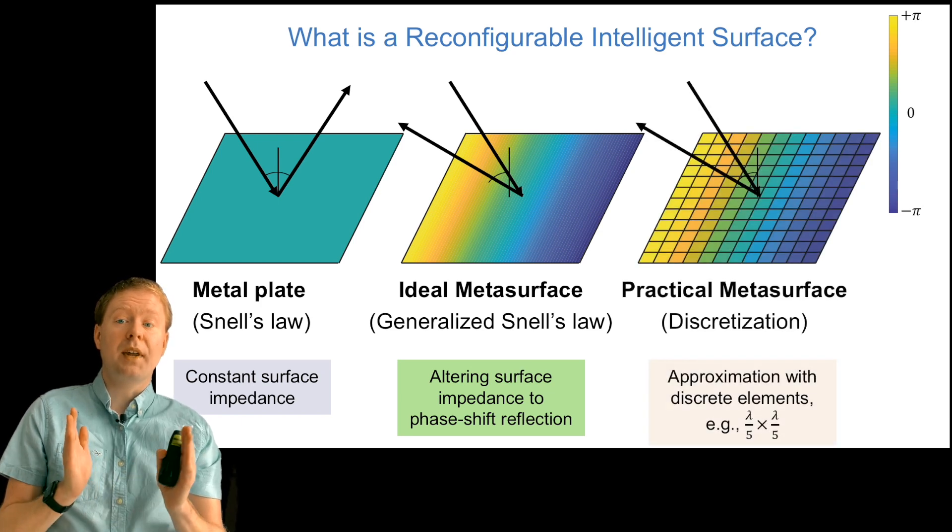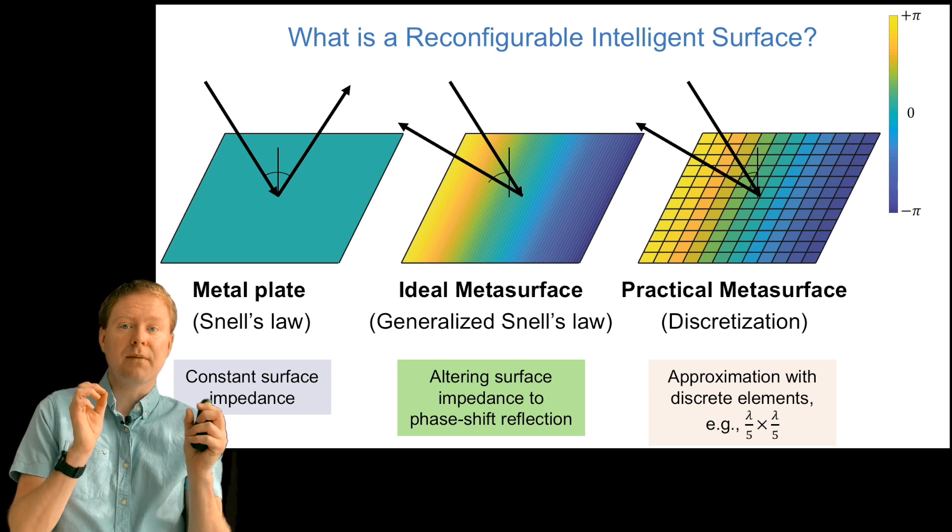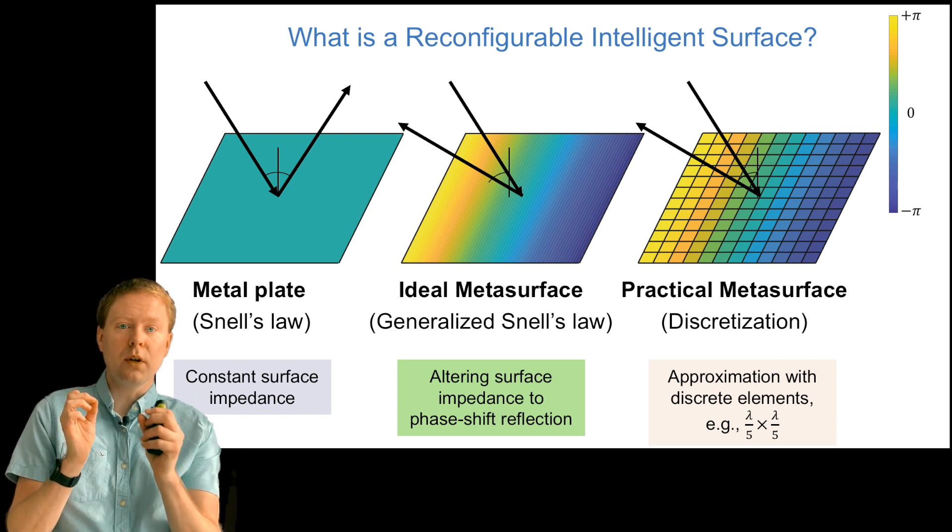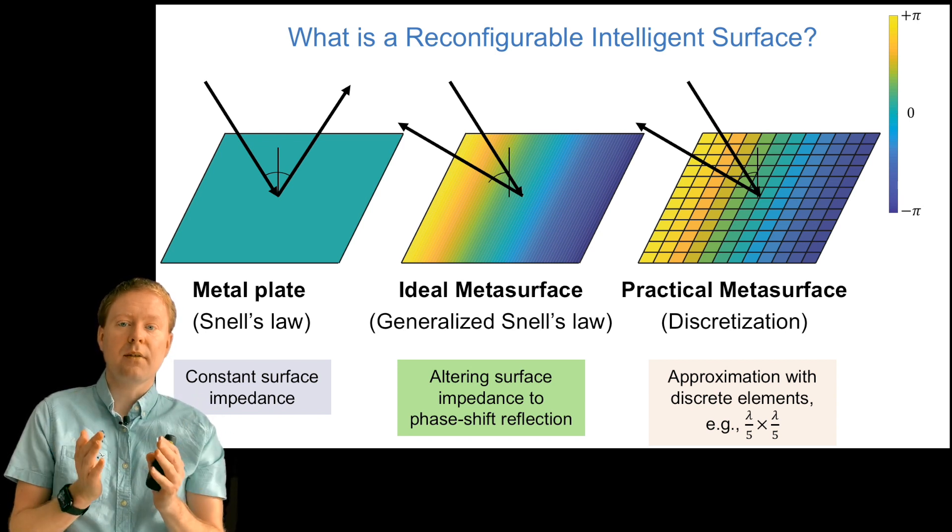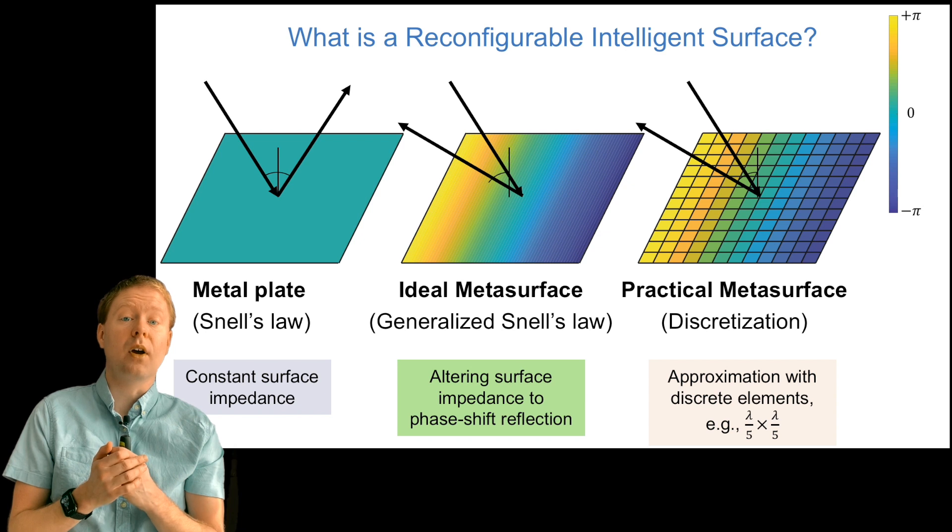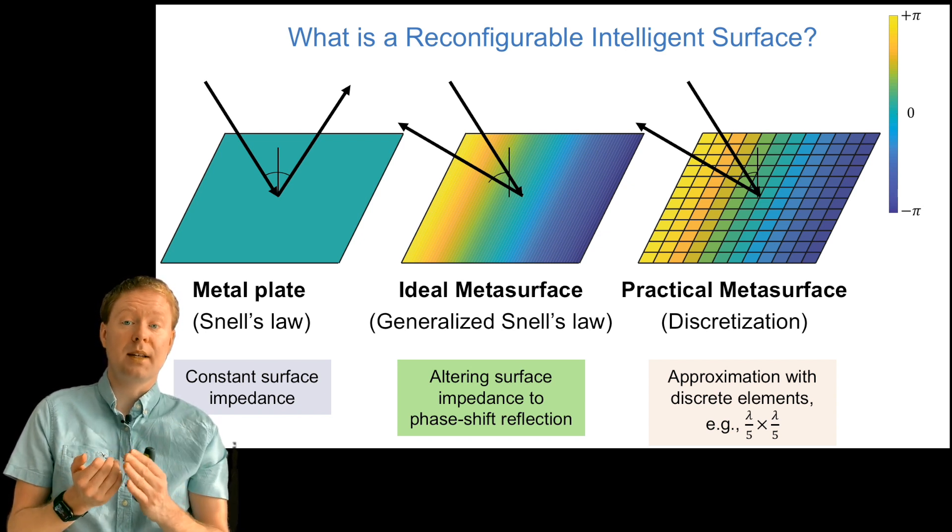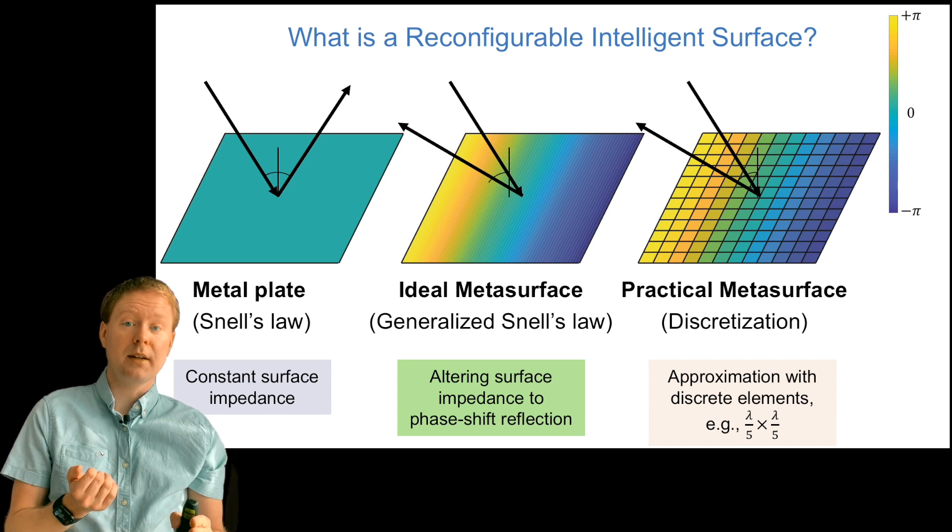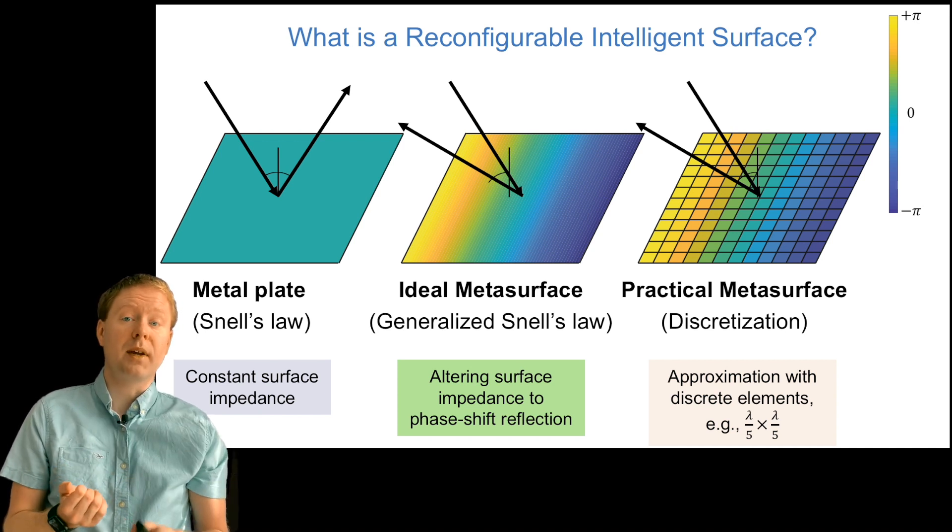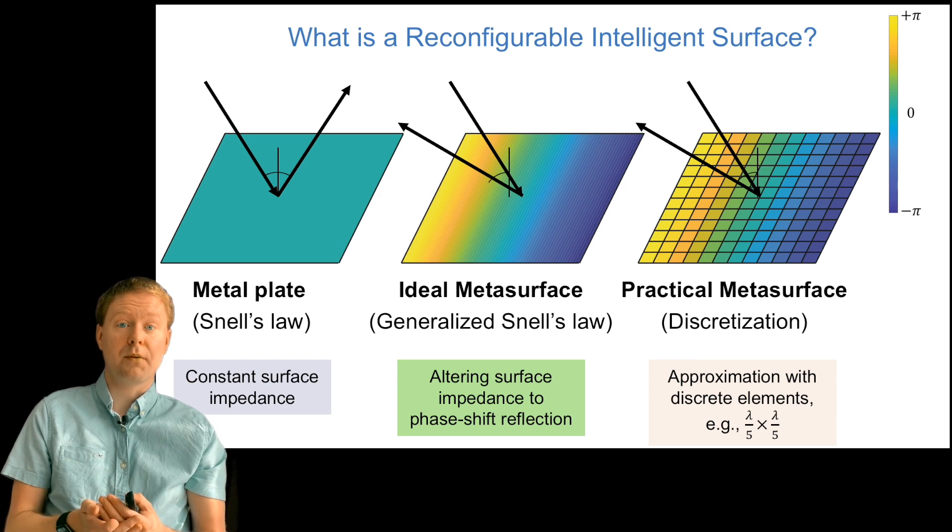In reality, we can't have continuous variations in the impedance, but instead we divide this surface into small subparts, size of an antenna or smaller, say lambda over 5 times lambda over 5. Each of them has a constant value of the surface impedance. By controlling that value, we can select that for a particular signal coming in from an angle, it bounces off in another particular angle. That is the main meta-surface concept.